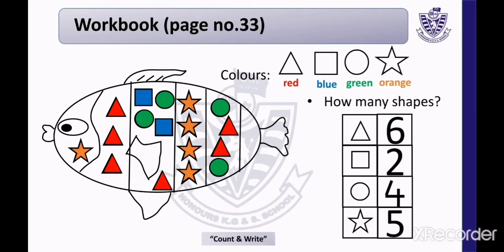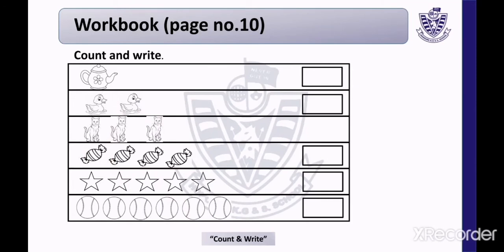Now turn to the next page. Open page number 10. The topic is Count and Write. As you can see, there are different objects here. Look at the first row — which picture is this?